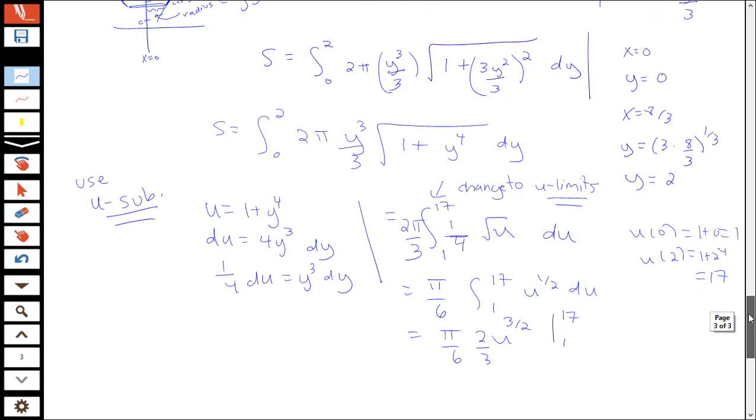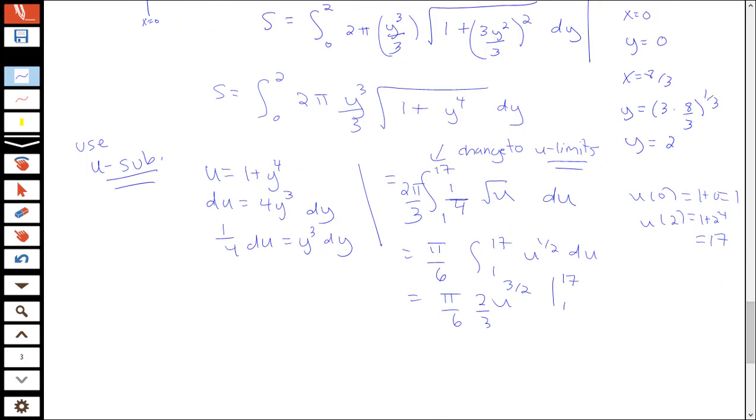Remember, since we did a u substitution, and we had our integrand here in terms of u, and our bounds in terms of u, I don't have to go back to y at all. Everything's all in terms of the same variable. So I have 2π over 18 here, or π over 9, times 17^(3/2) minus 1. And we can't simplify that anymore, so that's what we would leave as our surface area for this example.